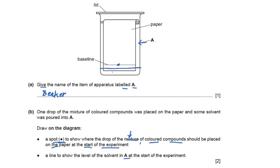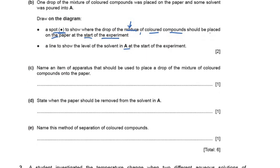Draw a line to show the level of the solvent at the start of the experiment — draw the solvent level below the baseline. Name an item of apparatus used to place a drop of the mixture onto the paper. To put a drop we will use a dropping pipette. You can also use a capillary tube, but here I'm writing dropping pipette.